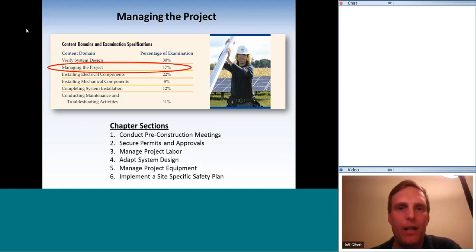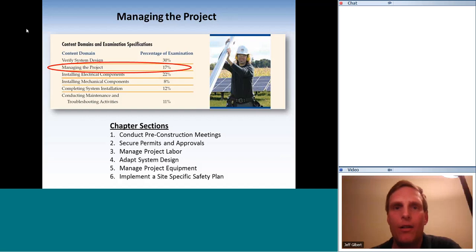Some of the sections I'll go through briefly because they are very subjective and there's nothing in the study guide to memorize. The items we really need to hunker down on are safety issues — that's the biggest portion. We're going to cover six sections: pre-construction, securing permits and approvals, managing project labor, adapting system design, managing project equipment, and implementing the site-specific safety plan.